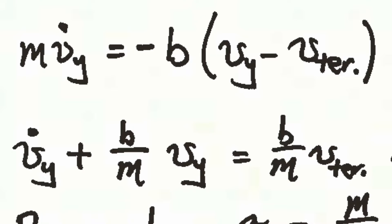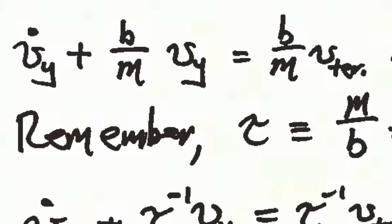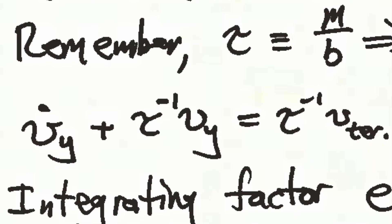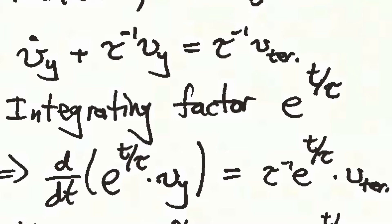Dividing both sides by the mass m and rearranging, we get vy-dot plus vy over the timescale tau equals the terminal velocity over tau, where tau is defined as the mass divided by the constant b. We can solve this differential equation by multiplying both sides through by an integrating factor, e to the t over tau. This turns the left-hand side into a time derivative of e to the t over tau times the velocity vy, equal to 1 over tau times e to the t over tau times the terminal velocity.